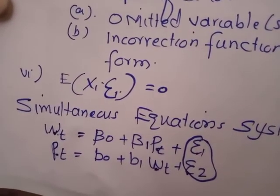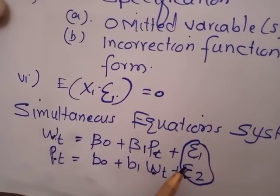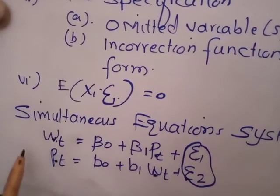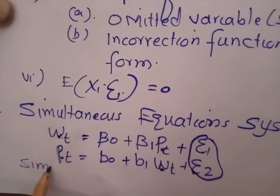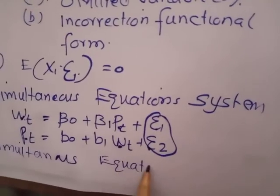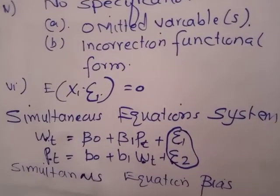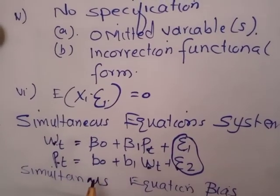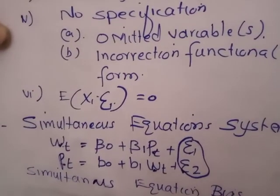Because OLS requires the independence of residual terms, we cannot apply OLS to a simultaneous equation system. If we still estimate these equations through OLS, simultaneous equation bias is the result. Simultaneous equation bias means that estimating simultaneous equations through OLS gives inconsistent estimators.